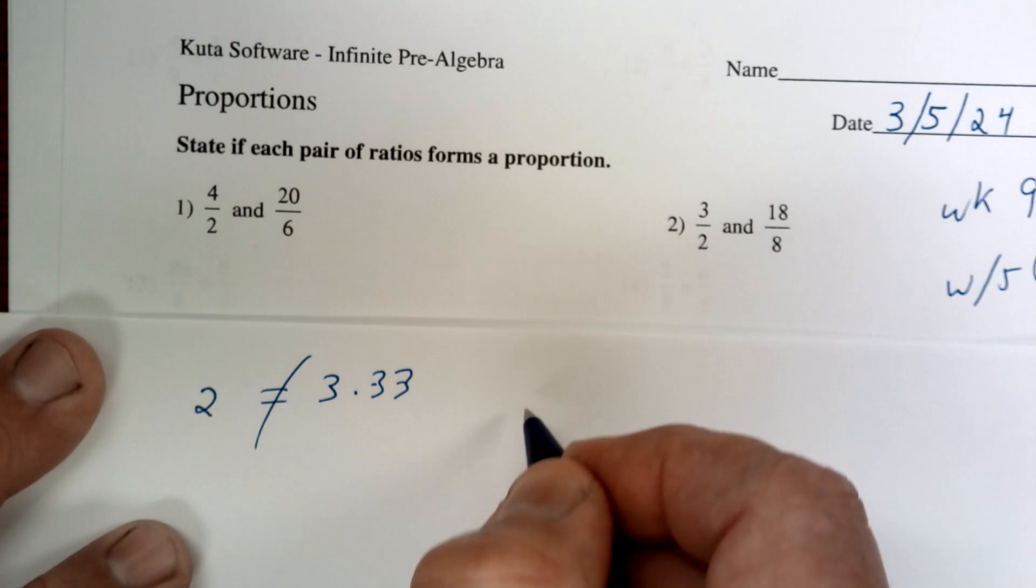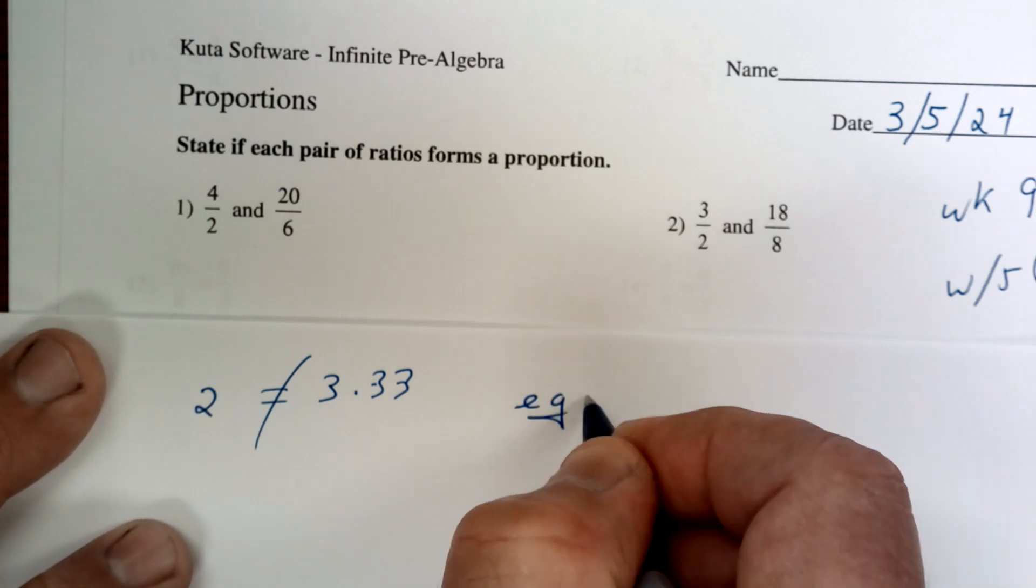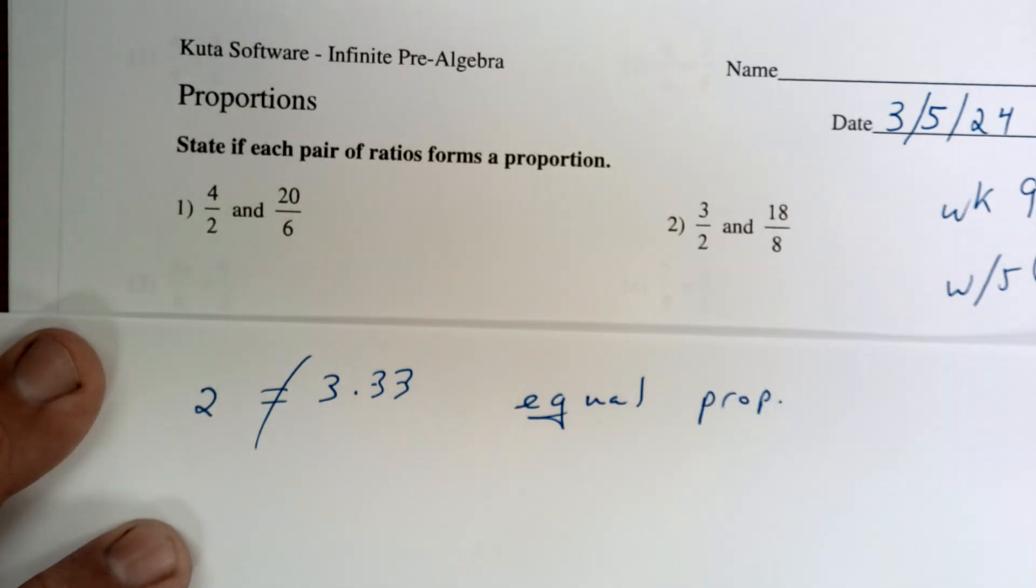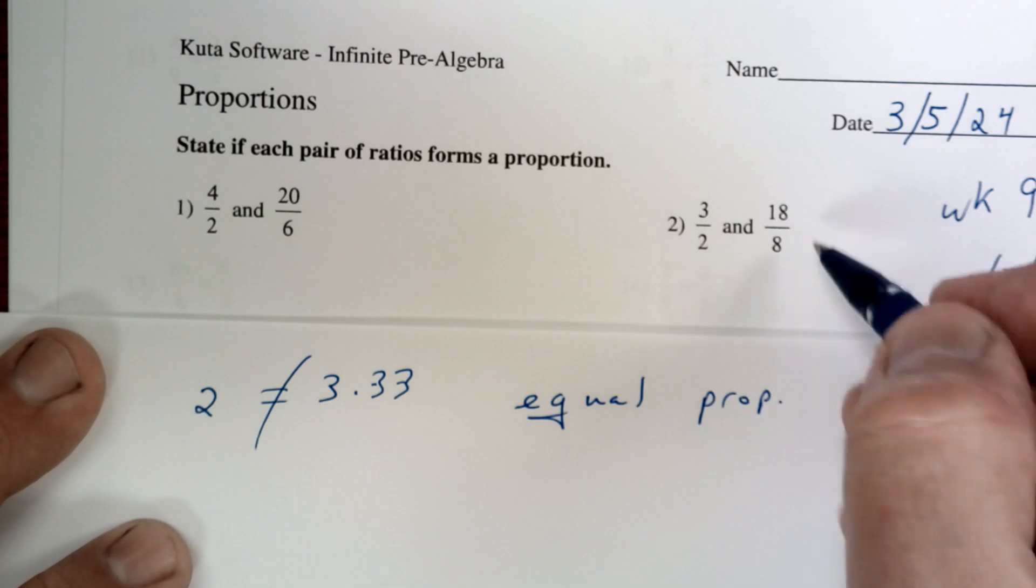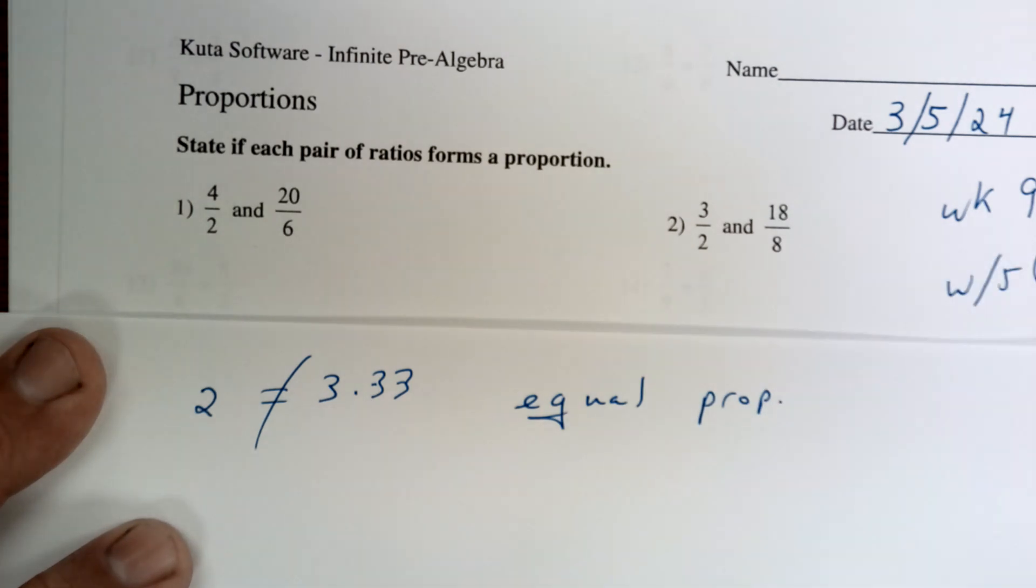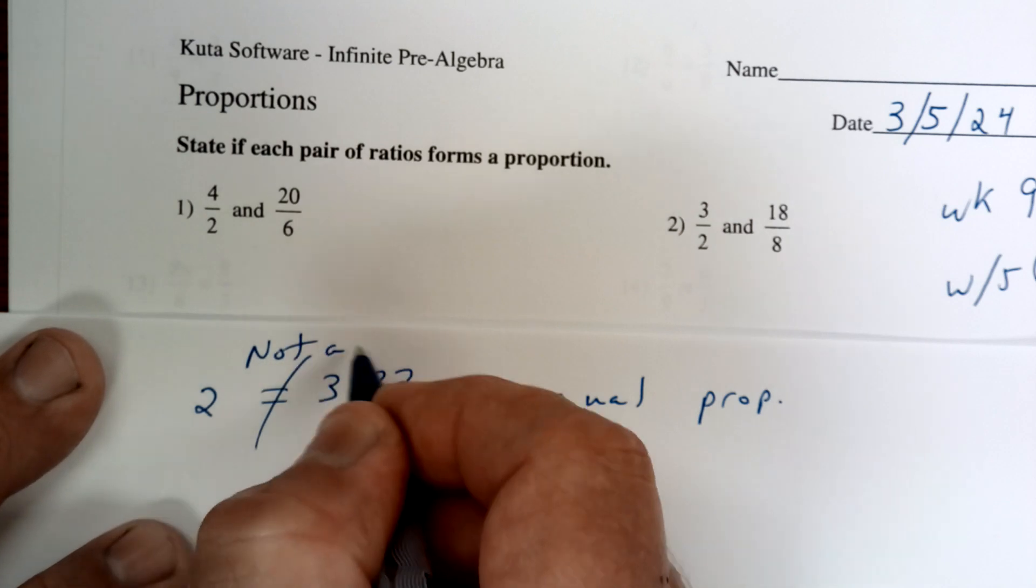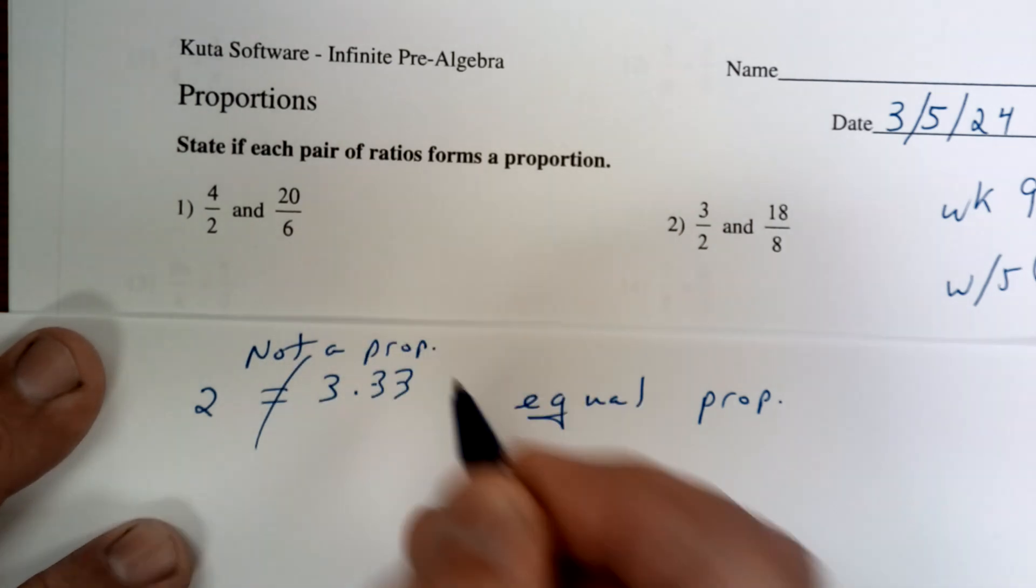These are not the same, so this does not form a proportion. They have to be equal, both of them, to be a proportion. You divide it and you divide it, and you see if they're equal. If not, you say no, not a proportion.